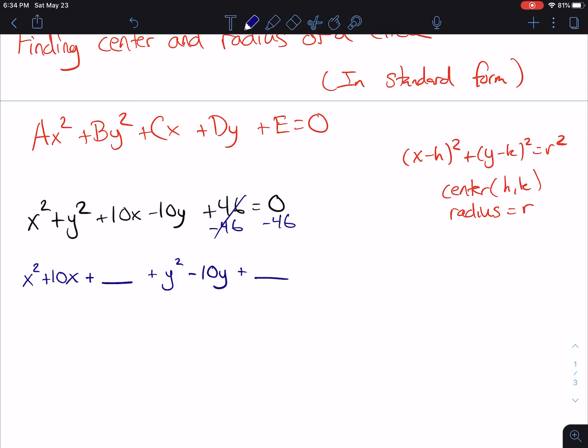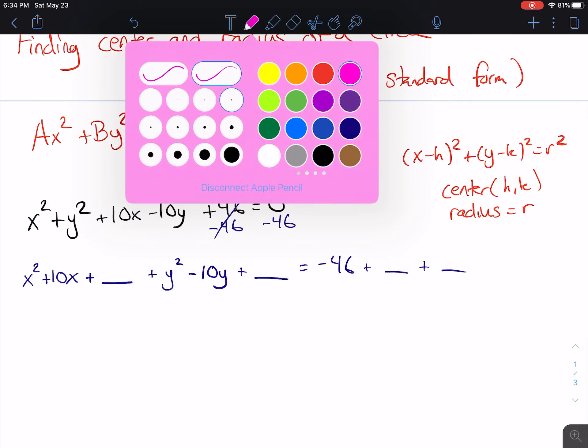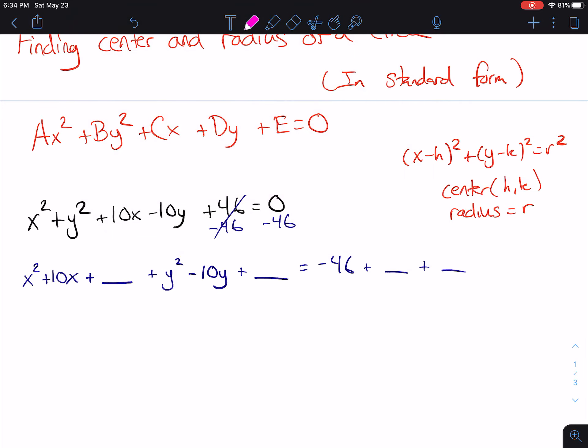Again, we're going to put another blank. I said earlier we're going to be completing the square twice. So we'll be completing the square on x squared plus 10x plus blank, and then separately we'll be completing the square on y squared minus 10y plus blank. Now, we have equals negative 46, but we're going to need to put two more blanks in. And the reason is I'm going to be adding a term to this 10x, and adding a term to this negative 10y. And whatever I do to one side, I must do to the other.